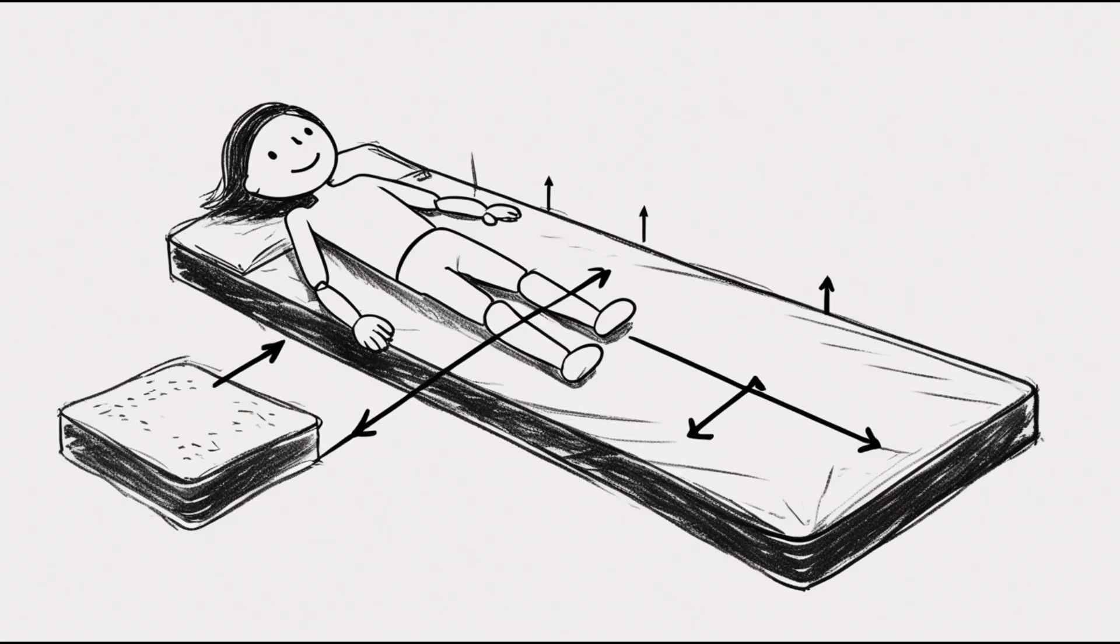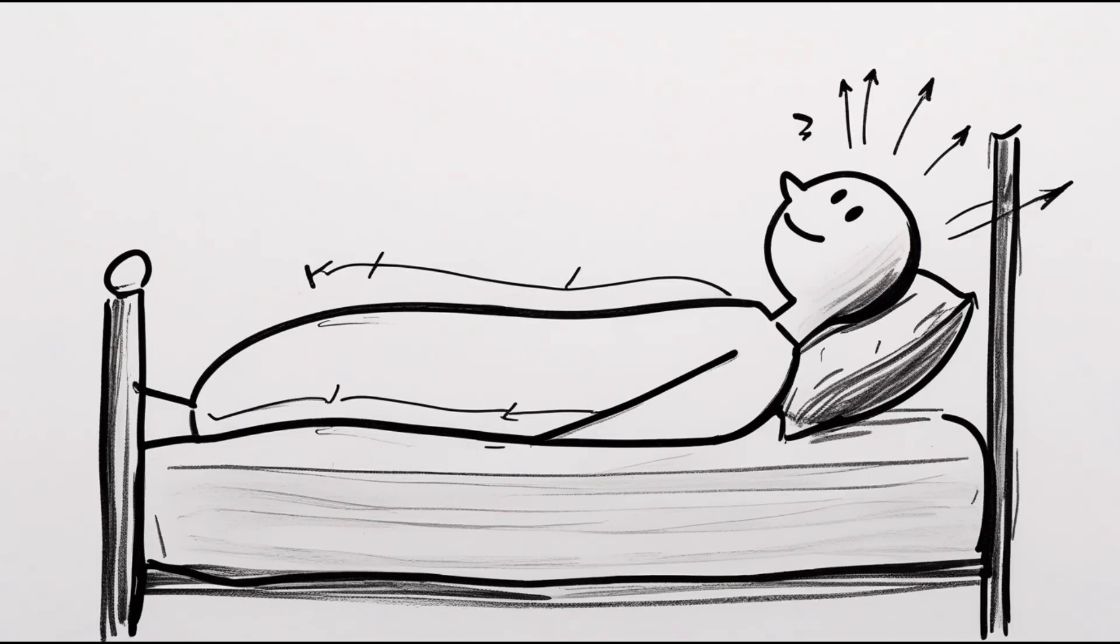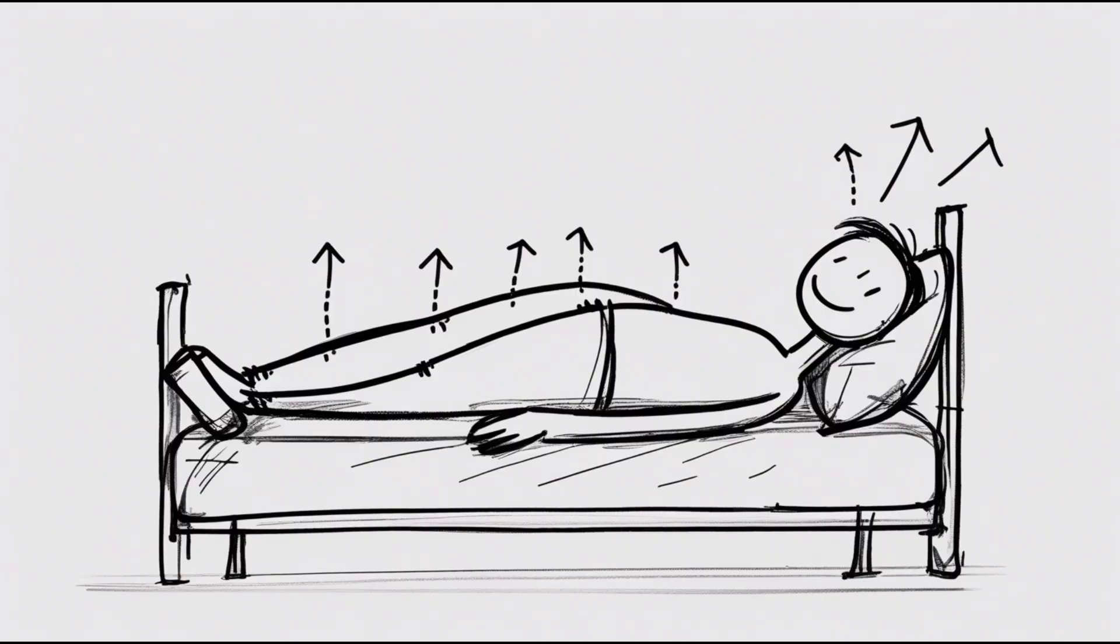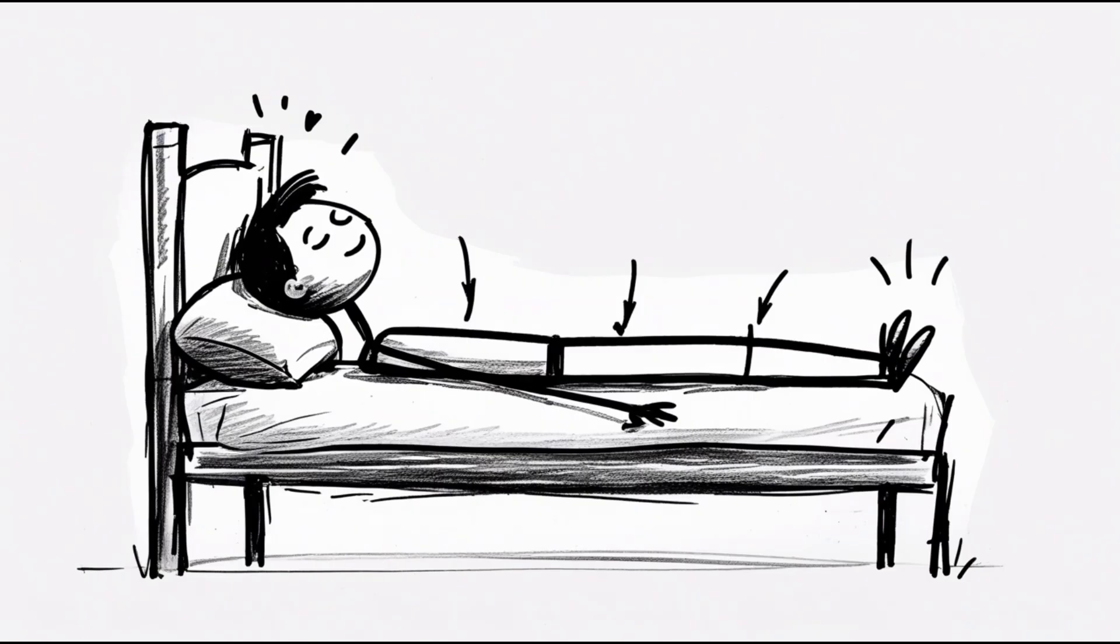The fix. Sleep on a firm mattress. Soft beds sink your spine. Ditch the pillow or use a thin one to keep your neck aligned. Try the tall man's sleep position. Flat on your back. Arms by your side. Legs extended. This prevents spinal compression overnight and helps your body recover in a lengthened state.